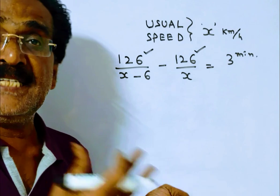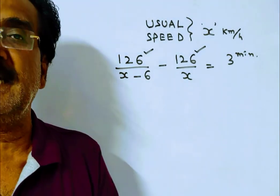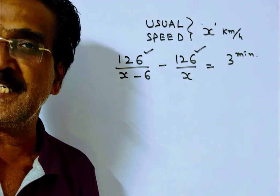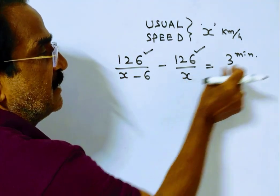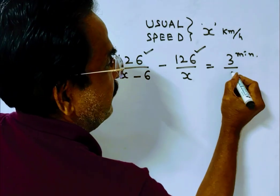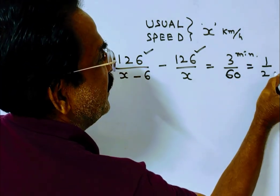Because to manage this 3 minutes early, it has to slow down its speed. So this minus this is equal to 3 minutes. 3 minutes means 3 by 60 hours, that is equal to 1 by 20.